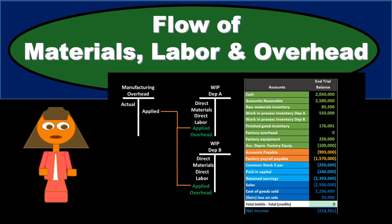In this presentation, we will take a look at the flow of materials, labor, and overhead within a process cost system. We're going to track the materials, labor, and overhead as they flow through from the raw materials to the finished goods within a manufacturing company.